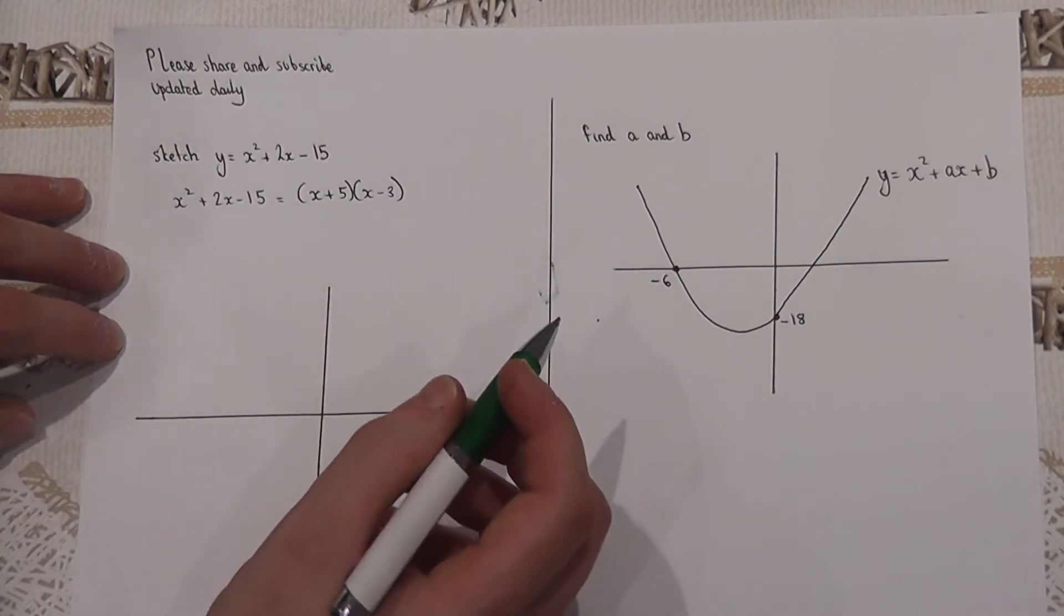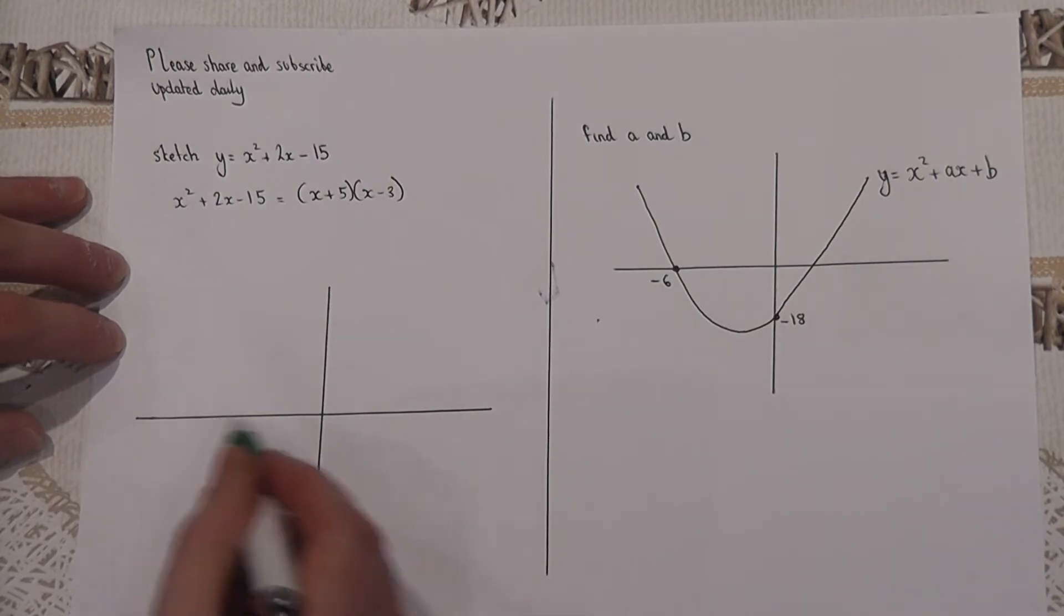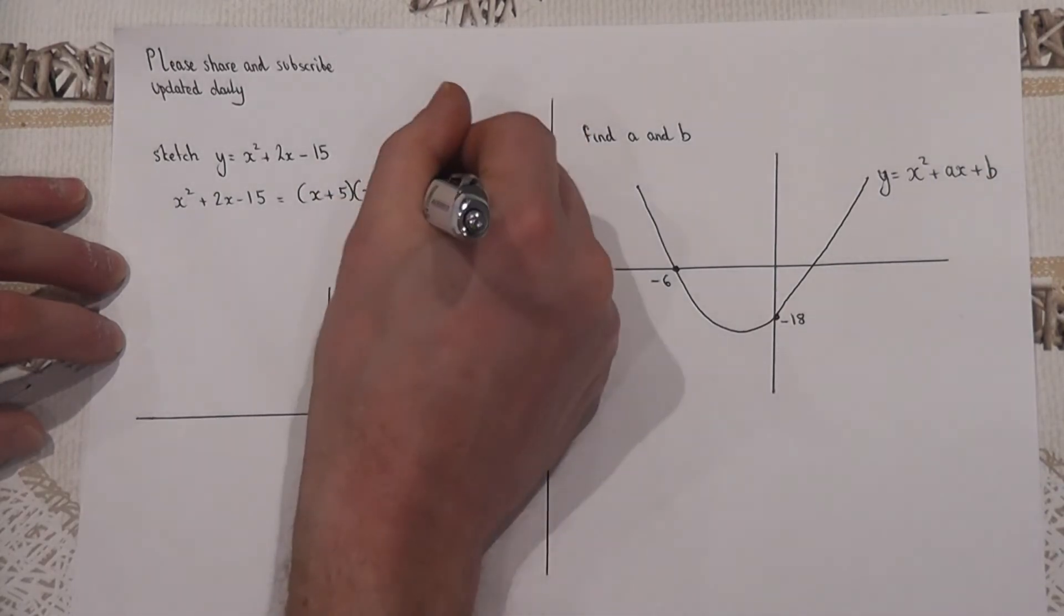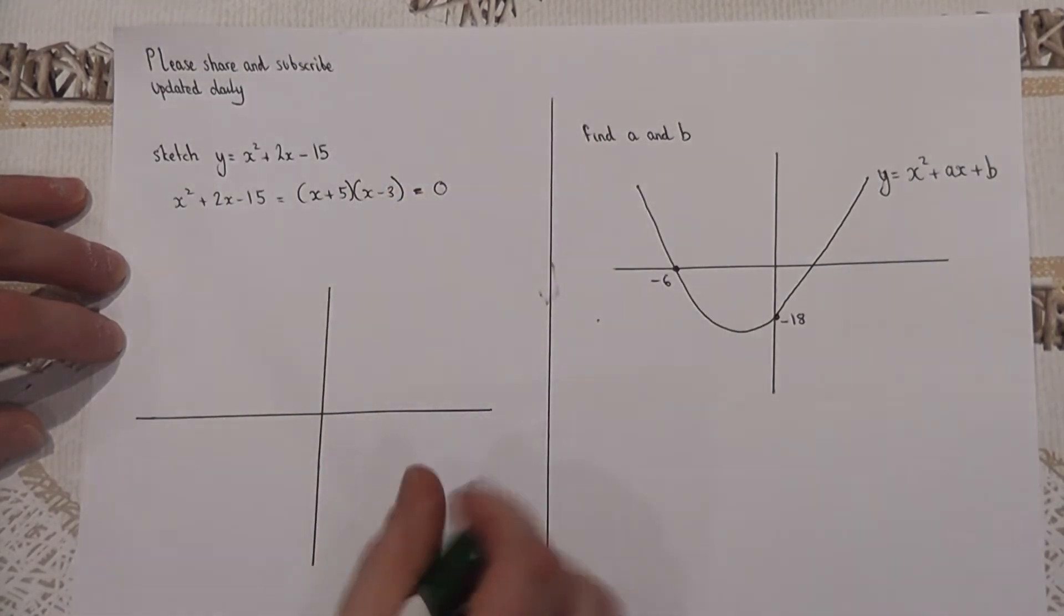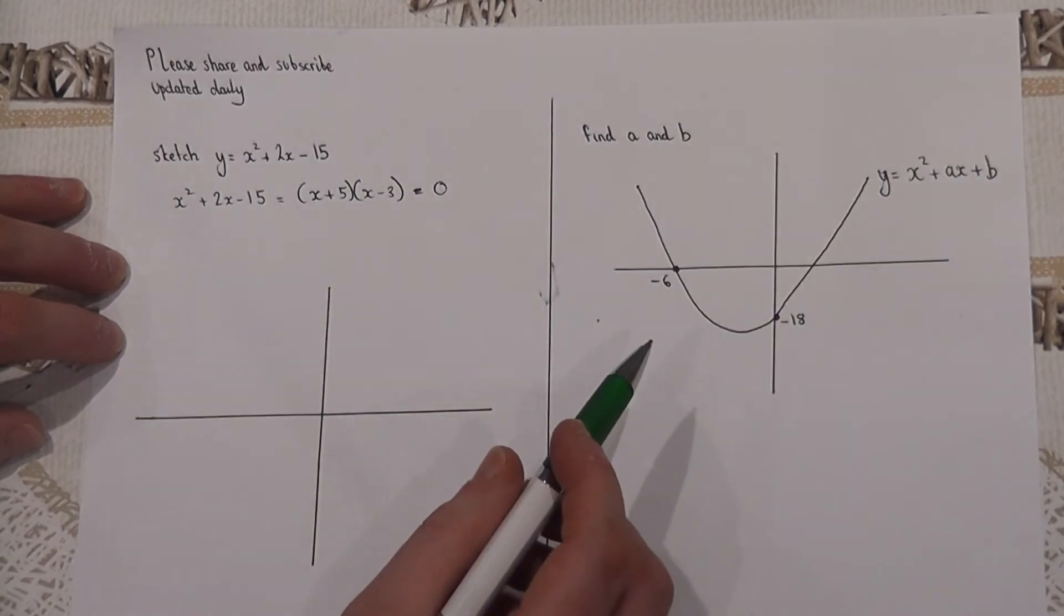And if we know the factors we can find what to call the roots. The roots are where the graph hits the x-axis. And if we try to solve where this equation equals zero, then to make this zero these two brackets must both equal zero.